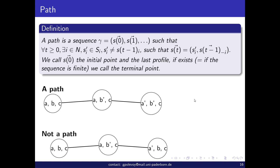We call the strategy profile at time zero the initial point, and if the path is finite and there is also a last profile, we call it the terminal point. In the first example, it is a path because the second player changes from B to B', then the first player changes from A to A' — exactly one player changes each time. The second illustration is not a path because at the second step both the first player changes to A' and the second player changes back to B simultaneously — two player changes at the same time is not a path.